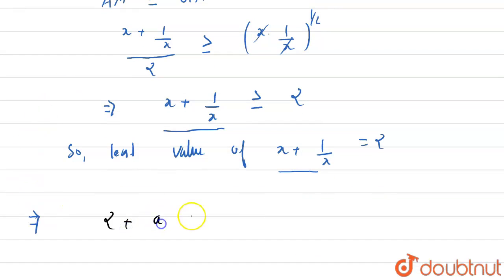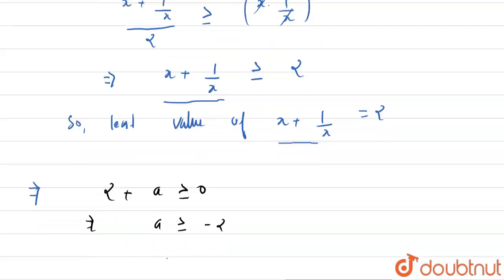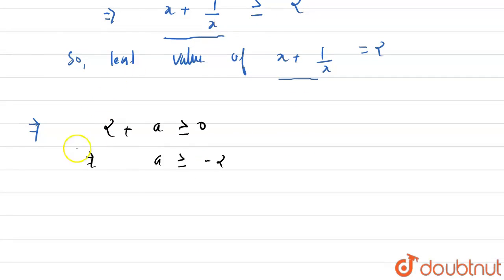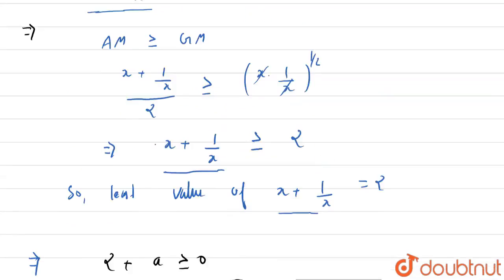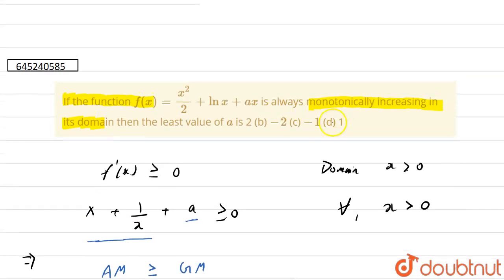then 2 plus a greater than or equal to 0, so a will be greater than or equal to minus 2. So we get the least value of a as equal to minus 2. If we see the options, then our option 2 is correct. So thank you!